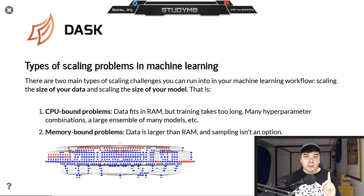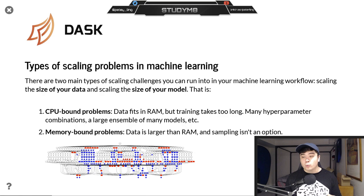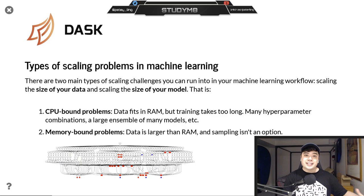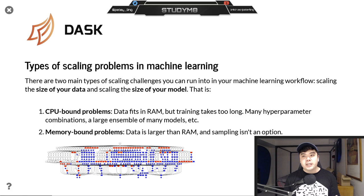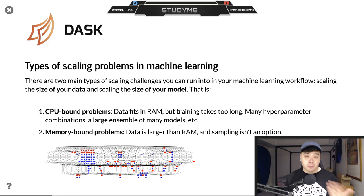The second is a memory-bound problem — we just don't have enough RAM or memory to even load or use the dataset we're working with. It's important that we understand the difference between these two problems because there are different solutions for each one within Dask, and we just need to know when to apply them.